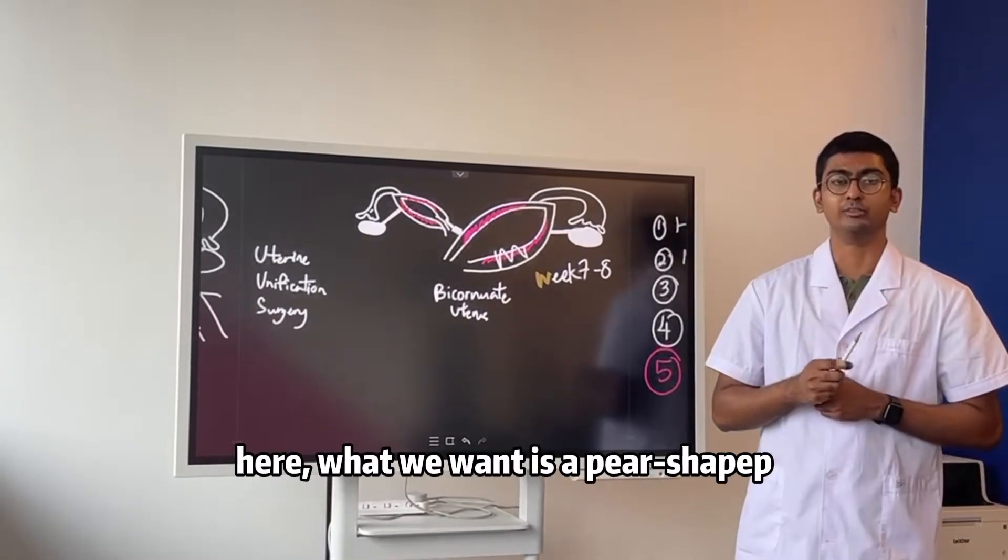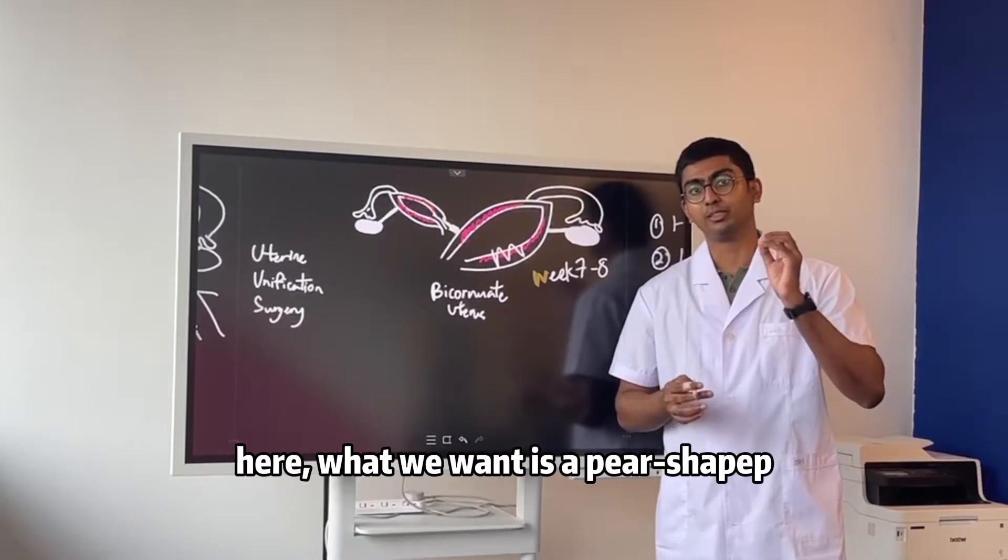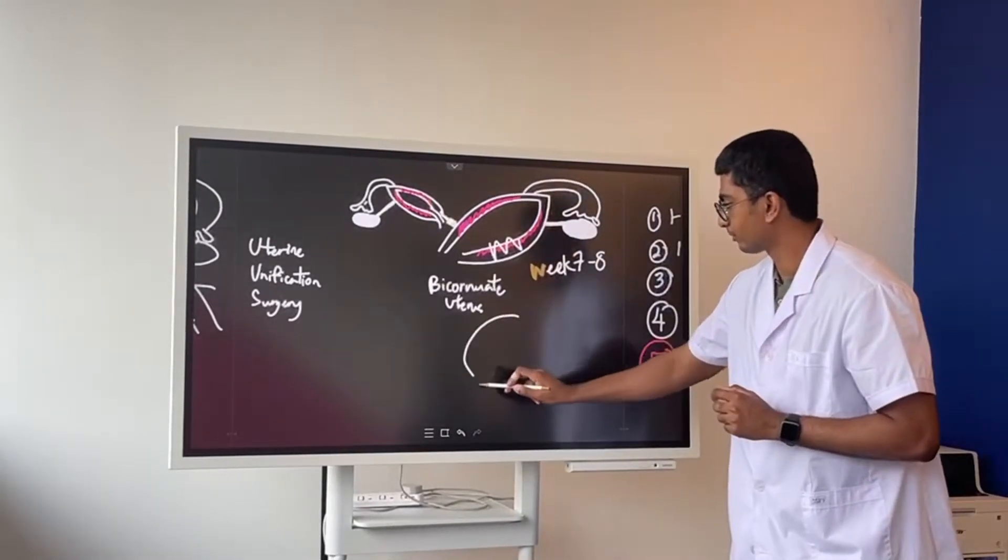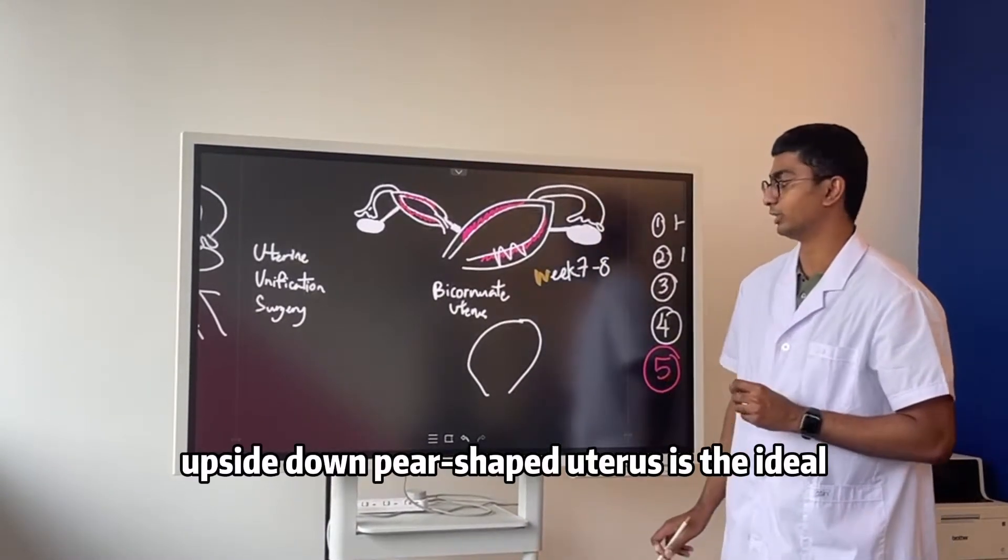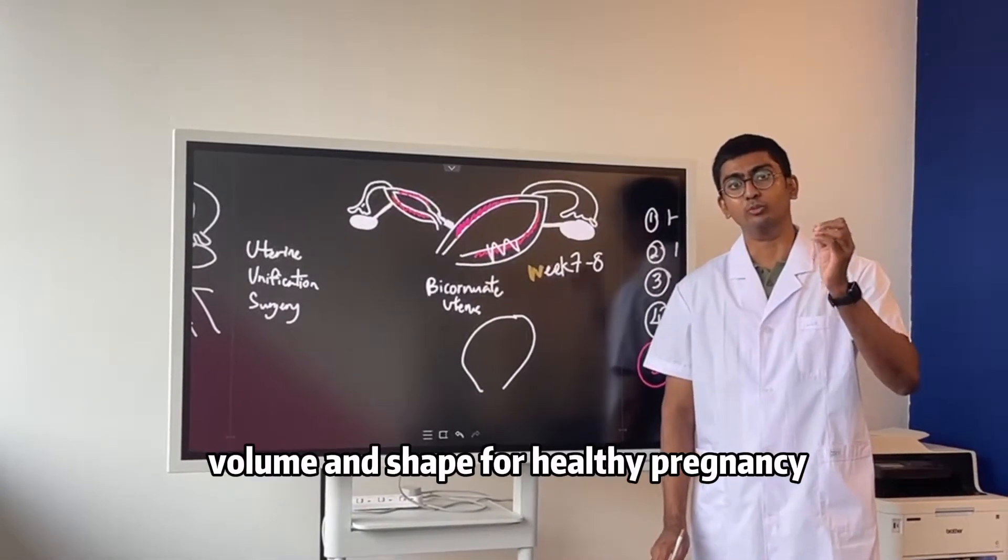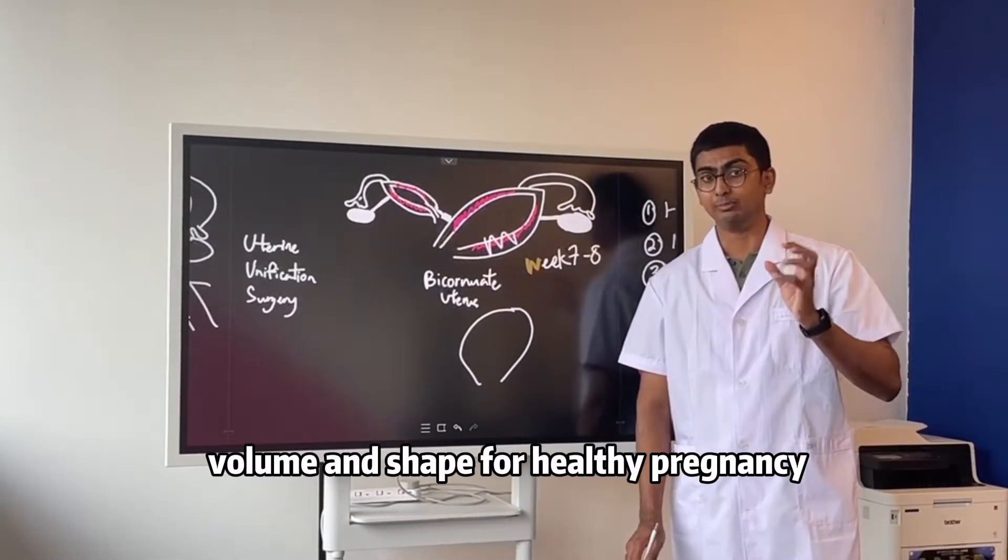So we've talked many times already, what we want is a pear-shaped uterus. Upside-down pear-shaped uterus is the ideal volume and shape for a healthy pregnancy.